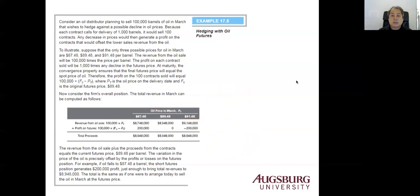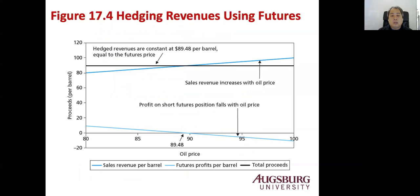Graphically, the blue line shows sales revenue increasing with oil price, and the other line shows the profit from the short futures position. Combining them gives a flat black line — the same proceeds regardless of whether the price increases or decreases. That's how you hedge using futures — you avoid the risk from a declining price.